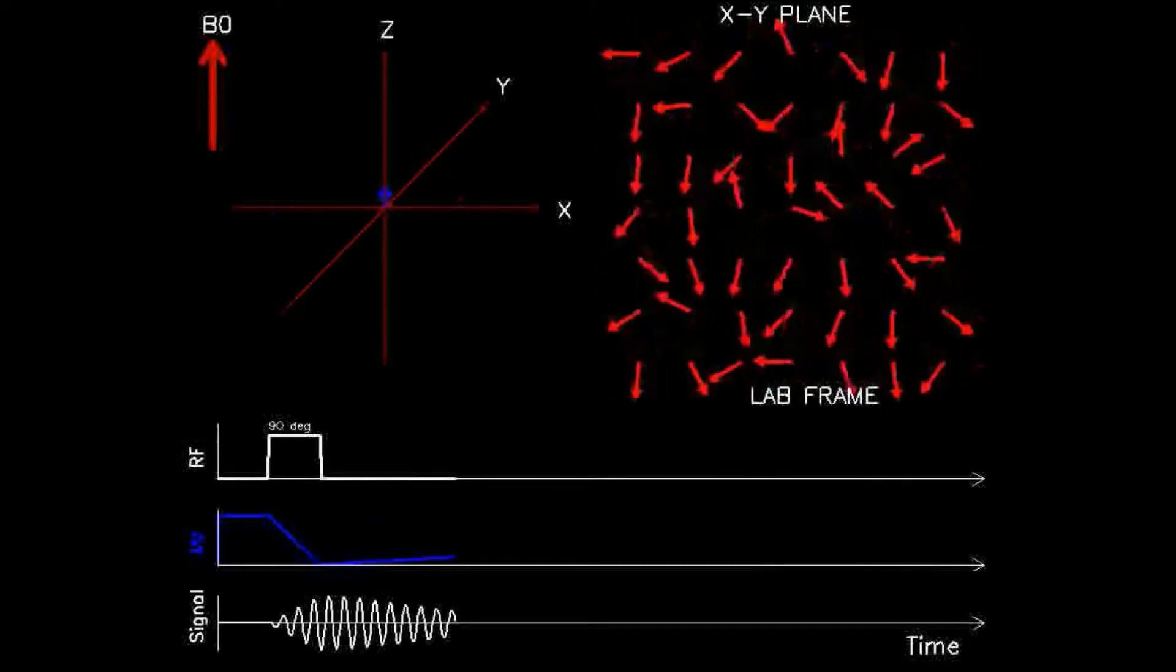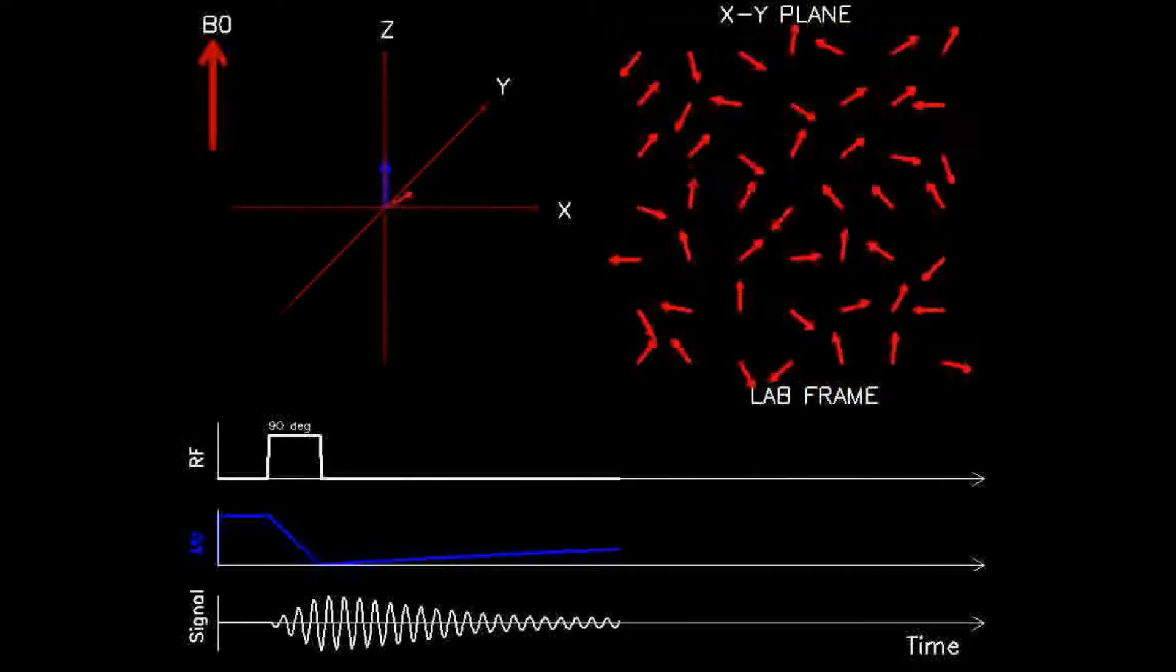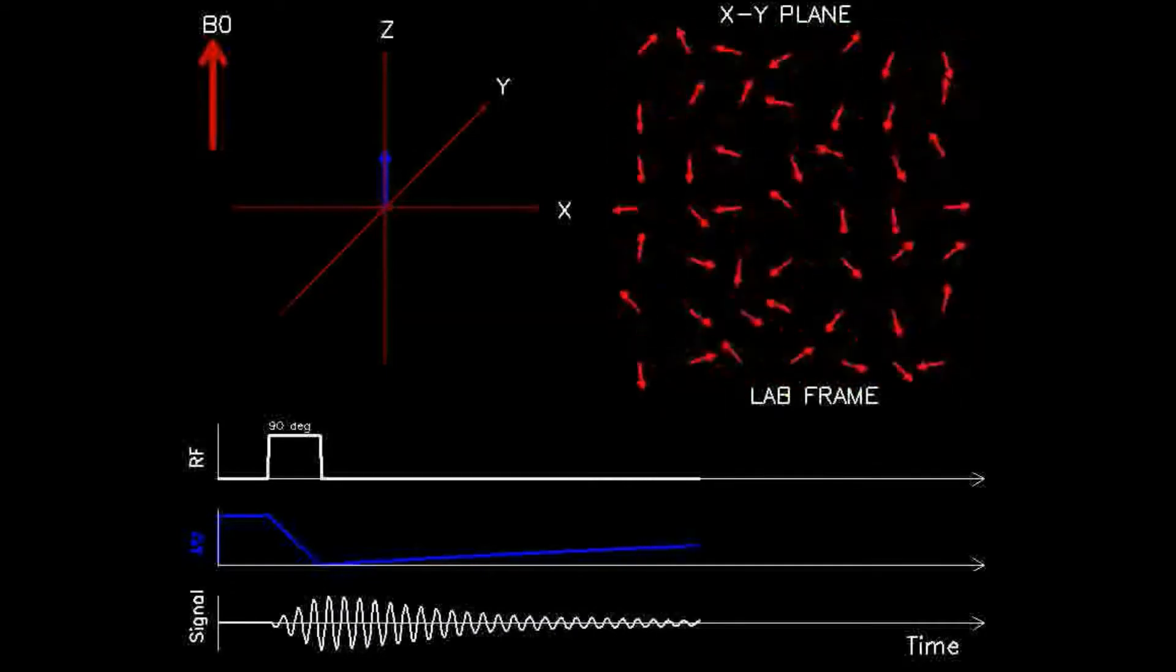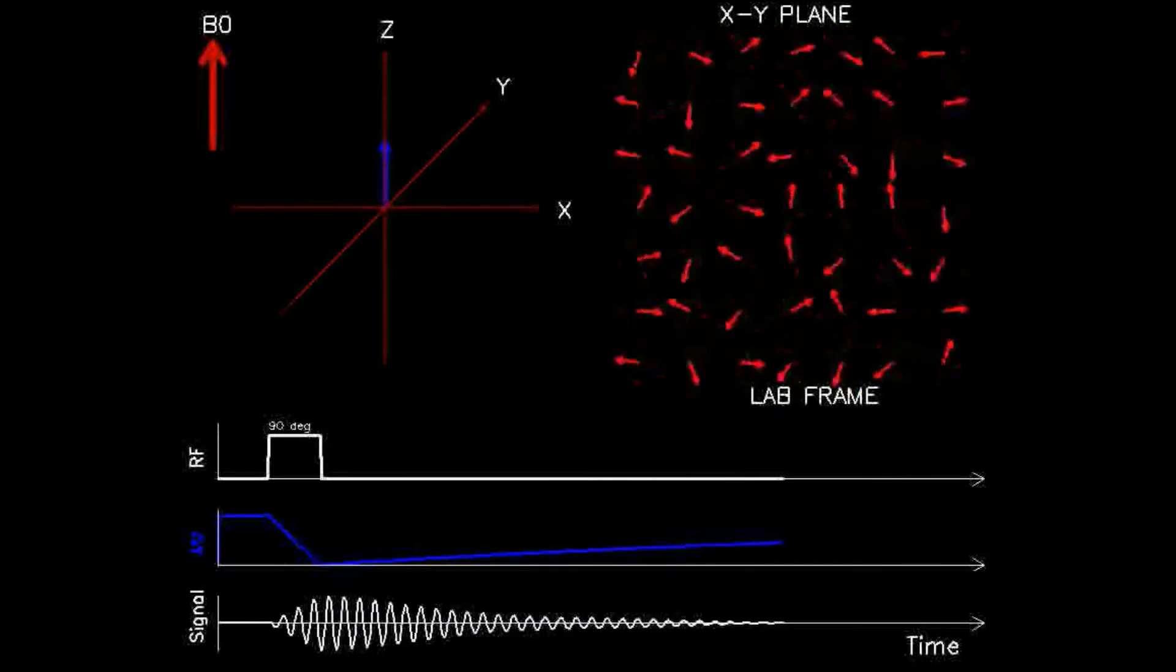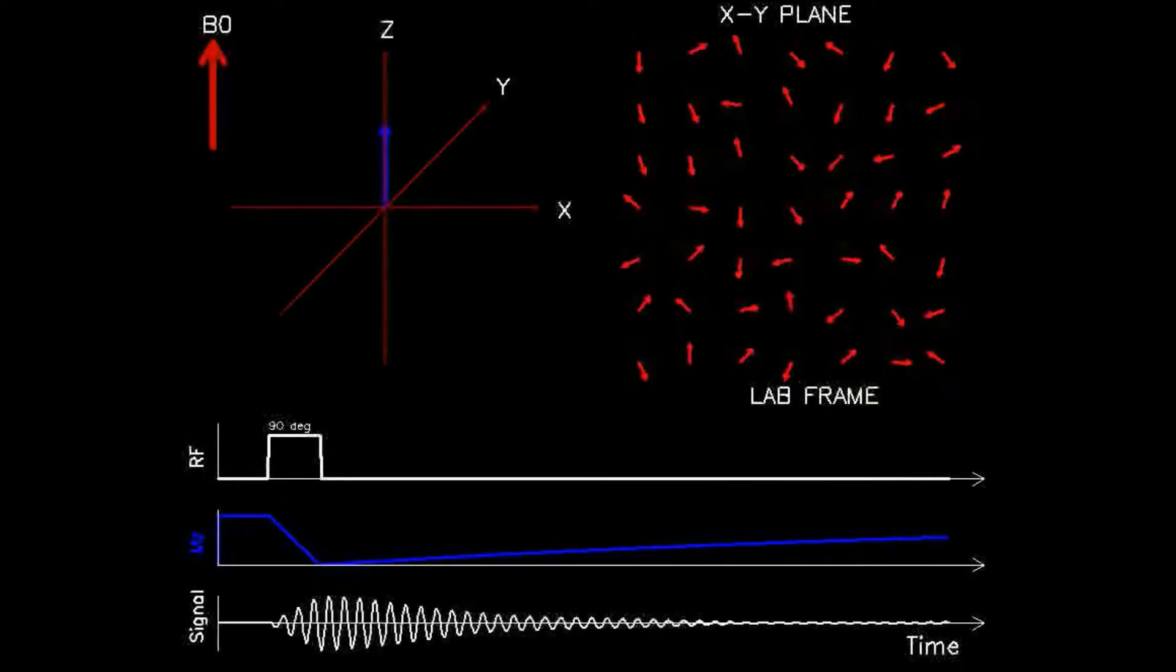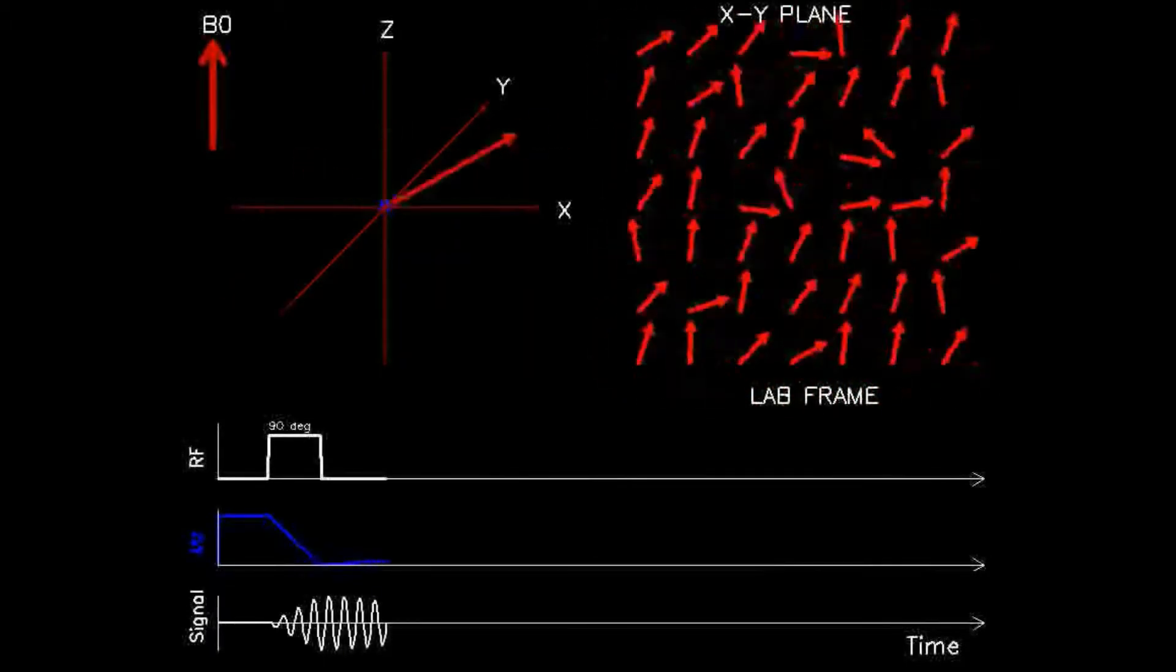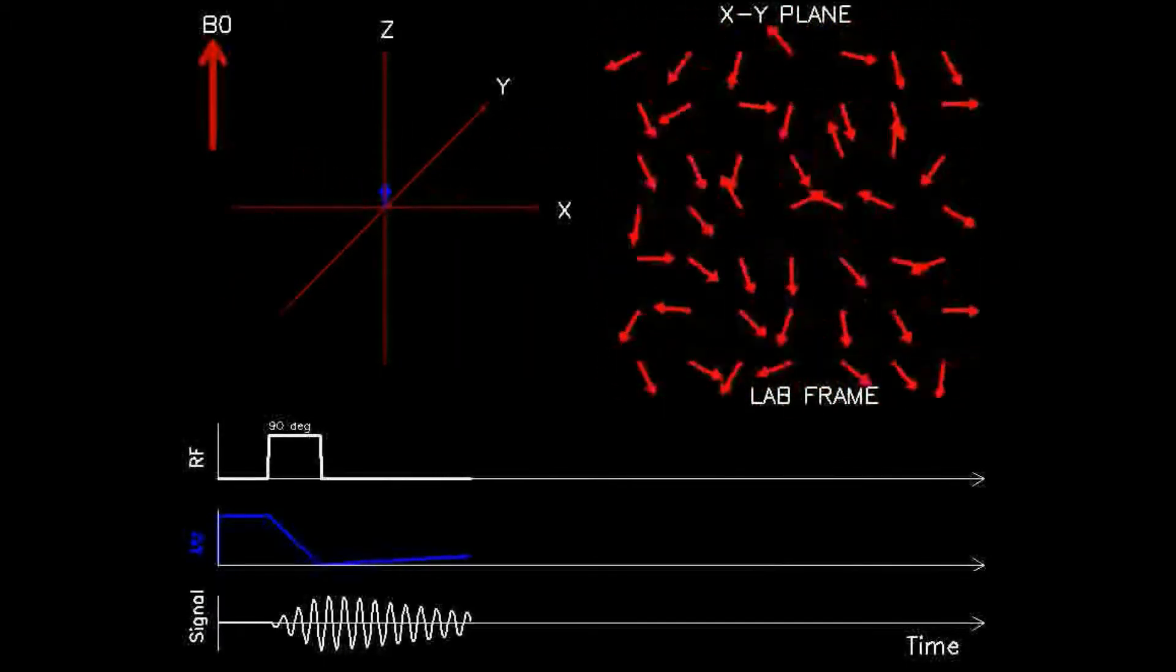Notice that at the beginning of the animation, the blue arrow points along the z-axis, demonstrating that the net vector prior to the RF pulse is in the z-axis direction. After the RF pulse is applied, the blue arrow shrinks and the magnitude of the vector is transferred to the x-y axis, represented by the red arrows.